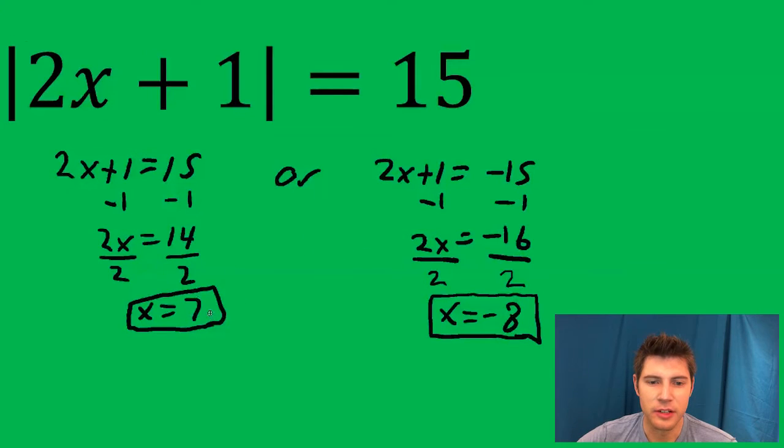So now if we were to plug these in, plug a 7 in here, you get 14 plus 1 gives you 15. And when you take the absolute value, you get positive 15. And if you plug in a negative 8, you get negative 16 plus 1, which gives you negative 15. Take the absolute value of that and you get 15.